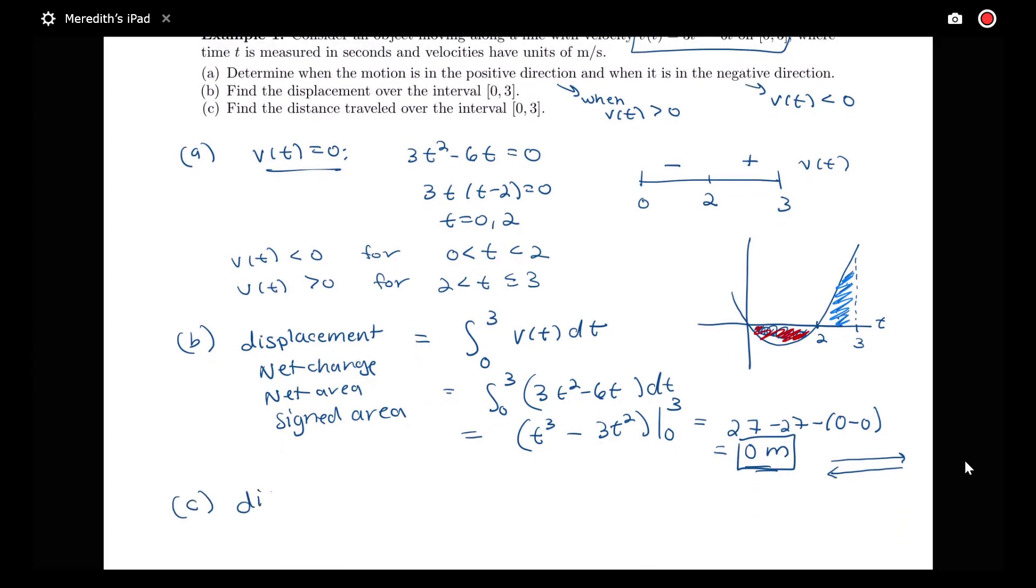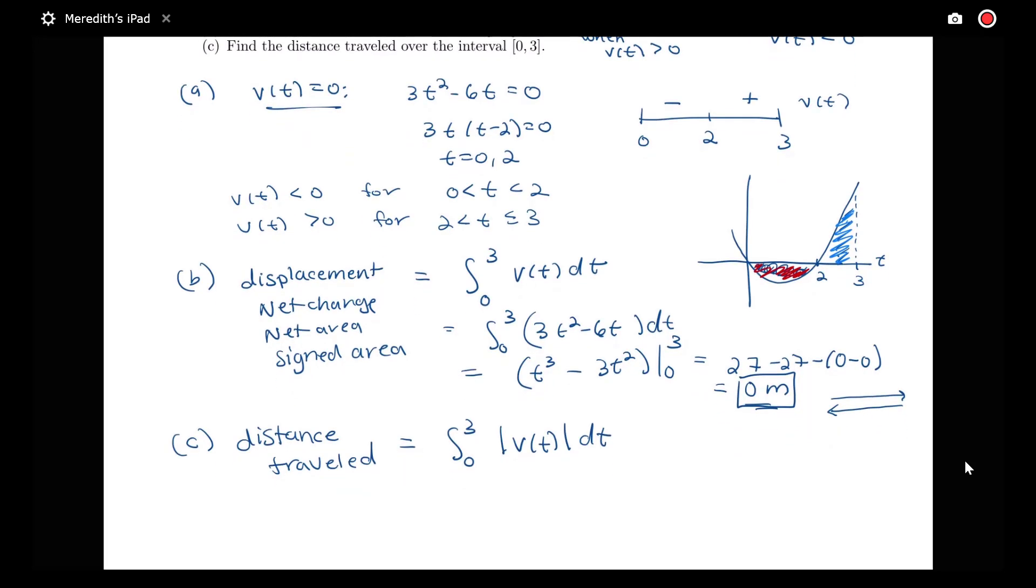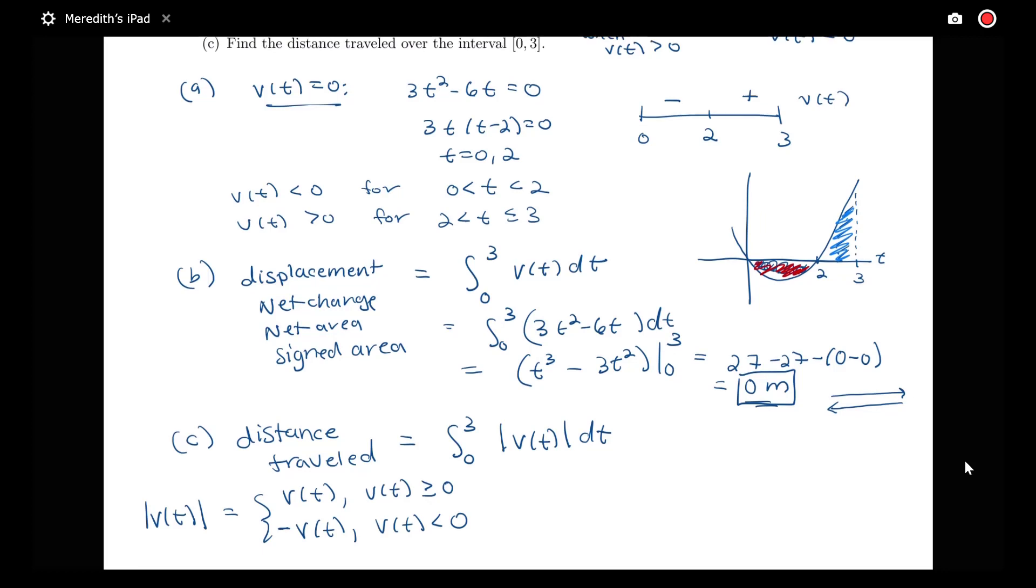Now let's look at the distance traveled question. Distance traveled doesn't care about direction. We want to look at the integral of the absolute value of our velocity, and here we need to make use of the sign chart. Remember that the absolute value of a function is defined to be what's inside the absolute value bars when that's positive, and the negative of it when that value is negative, since if that value is negative, we multiply it by a negative to make it positive.